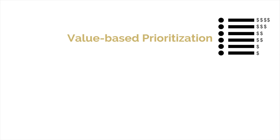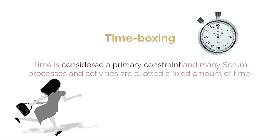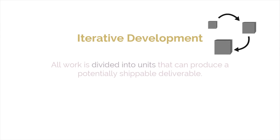Value-based prioritization, in which the highest priority is to satisfy the customer through early and continuous delivery of maximum business value. Time-boxing, in which time is considered a primary constraint and many Scrum processes and activities are allotted a fixed amount of time. And iterative development, in which all work is divided into units that can produce a potentially shippable deliverable.